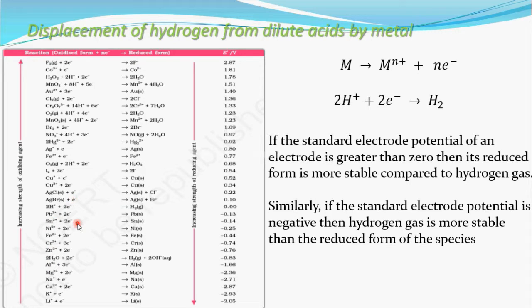When the reduced form is not stable compared to hydrogen gas, the oxidized form is more stable. Electrons will be liberated and taken by H+ ions, so H+ ions will be displaced into hydrogen gas. Hydrogen gas is more stable and the oxidized form of these metals is more stable.